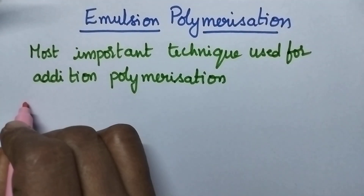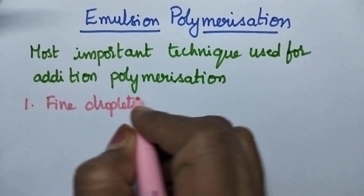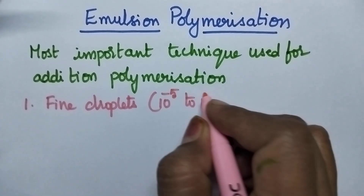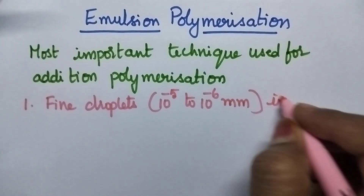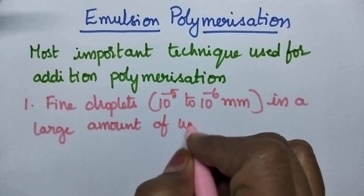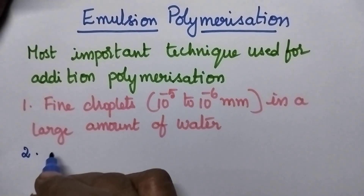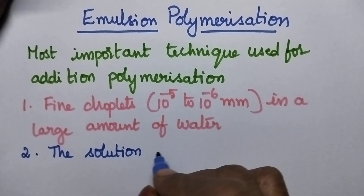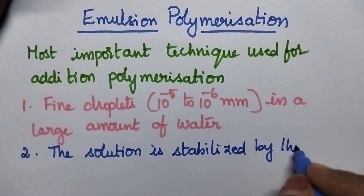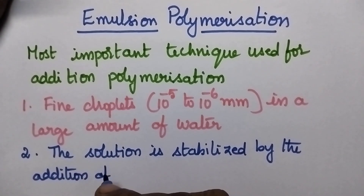In this method, generally the monomer is dispersed in the form of fine droplets — that means the size of the monomer may be around 10 to the power minus 5 to 10 to the power minus 6 mm — in a large amount of water. The solution is stabilized by the addition of emulsifying agents such as soap or detergent.